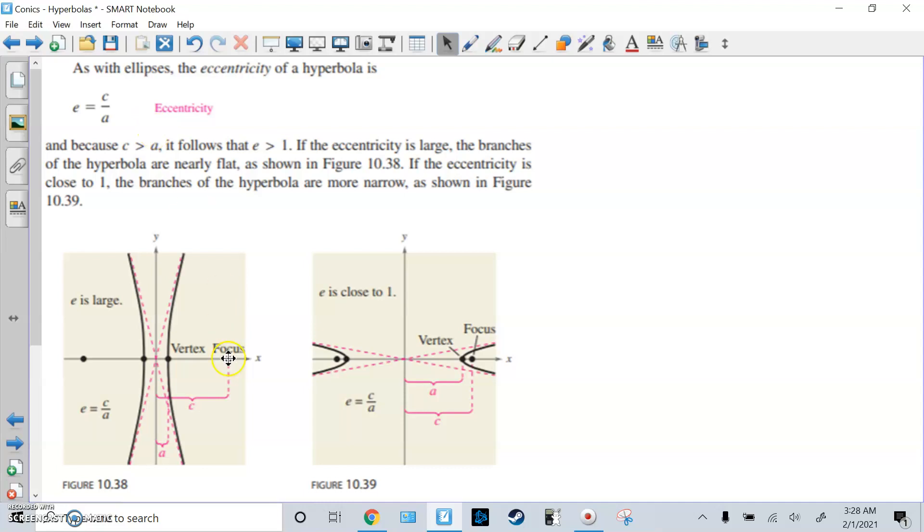All this time, C over A is bigger than 1, because the focus is on the outside, so it's going to be bigger than 1. If it's large, the branches are pretty much flat, like this picture. If it's small, then it's going to be very narrow, like this picture.